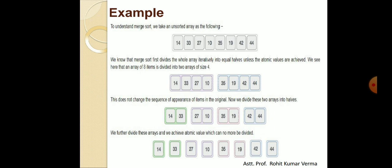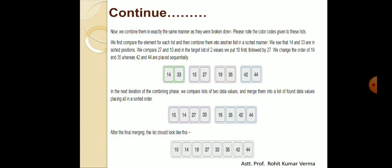Now we start the conquer technique where we begin combining these atomic values, and during combination we simultaneously perform the sorting process. First we combine 14 and 33 — they are already in sorted order. Then we check 10 and 27 — we place them in proper order. Now combining the two sub-lists 14, 33 and 10, 27, we perform sorting and the resulting sorted list is 10, 14, 27, and 33.